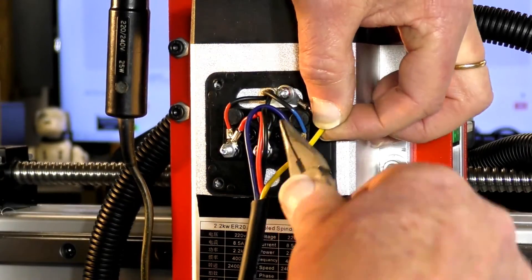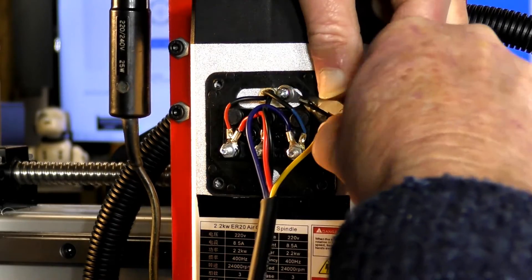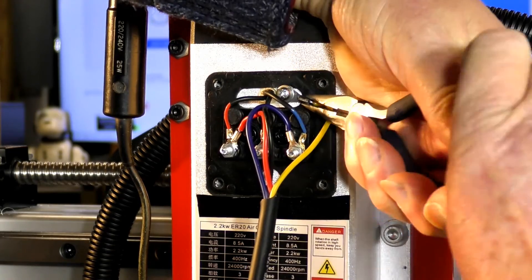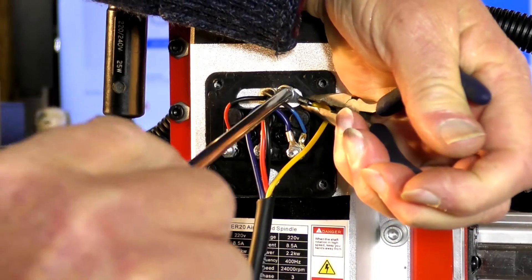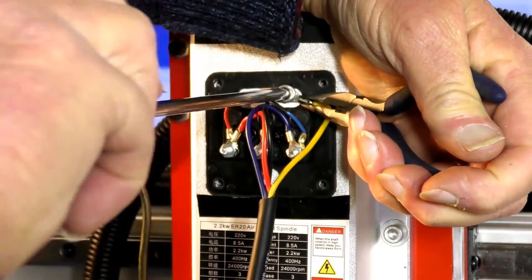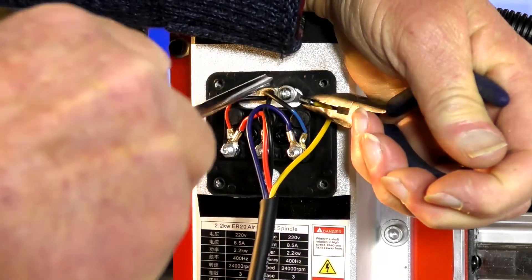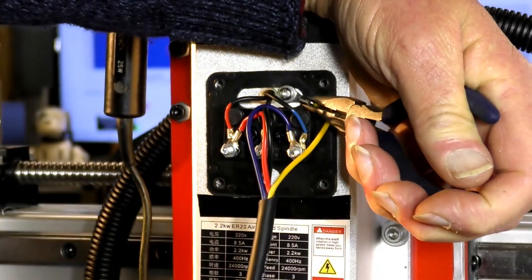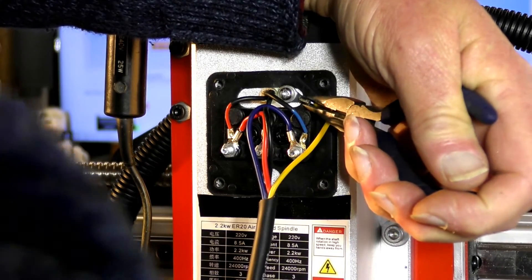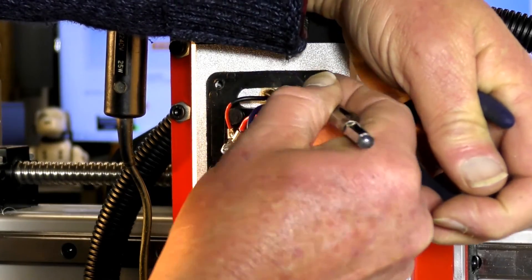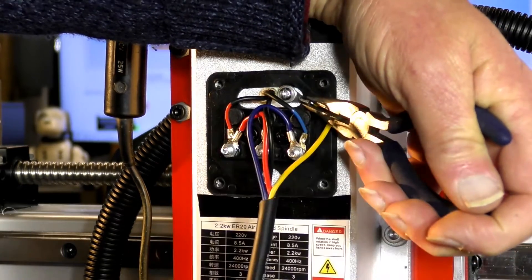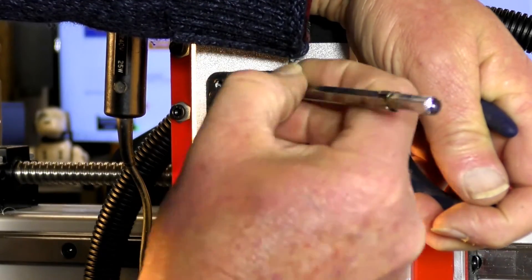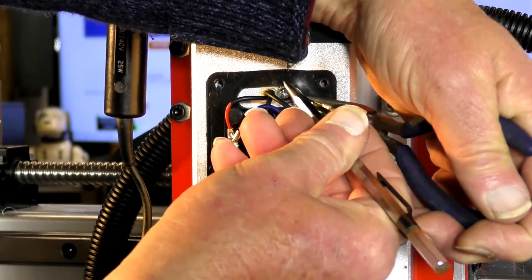Actually what I need is a pair of pointy nose pliers to hold that, because I want it to be in that exact position. Get that rubber out of the way. Let's tuck it down. Pull that rubber out of the way.